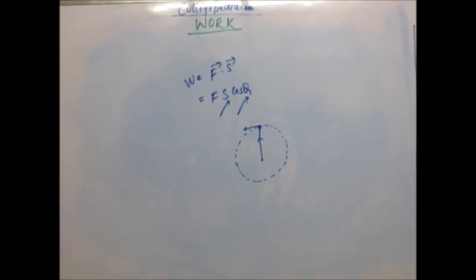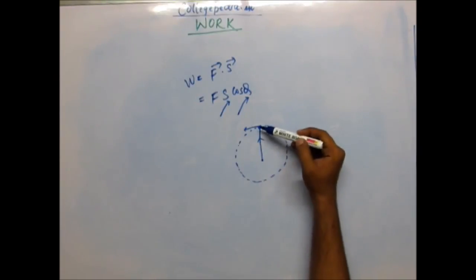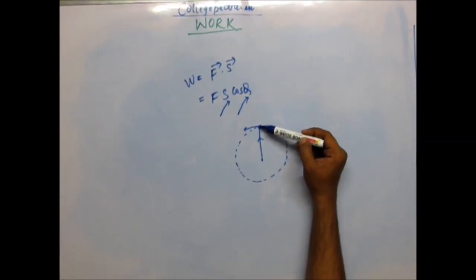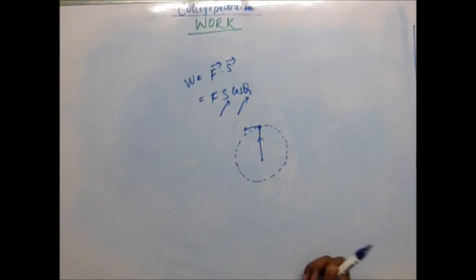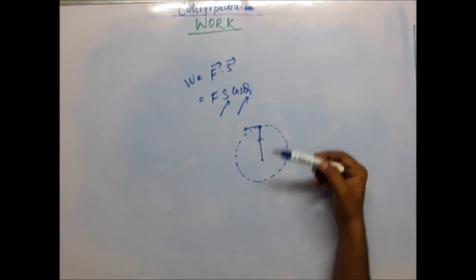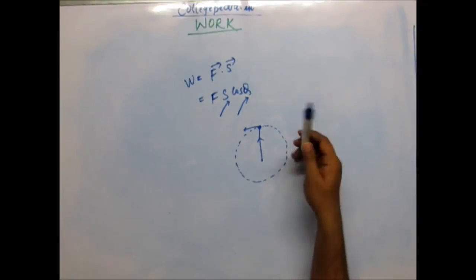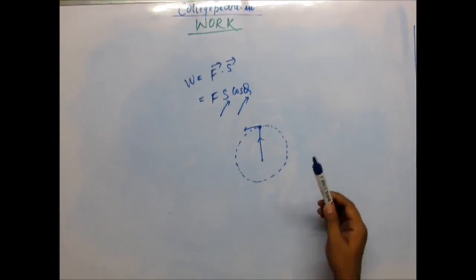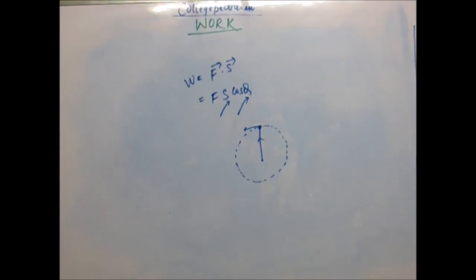In these cases, the work done will be zero, even though your hands get tired. In the physical sense, no work is considered done. The stone keeps coming back to the same position — over one full time period, the net displacement of the body is zero. So by the definition of work we have adopted, the work done by you is zero. When velocity is perpendicular to force, the displacement is also perpendicular to the force at any given moment, so the angle theta = 90°, and work done is zero.